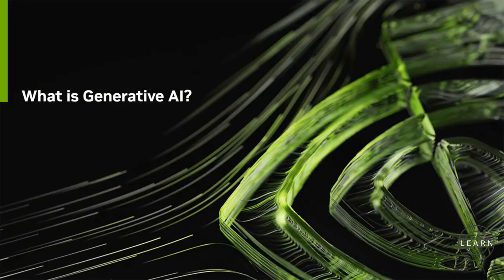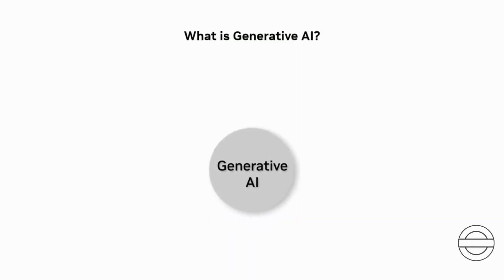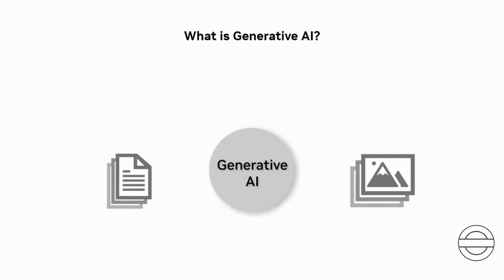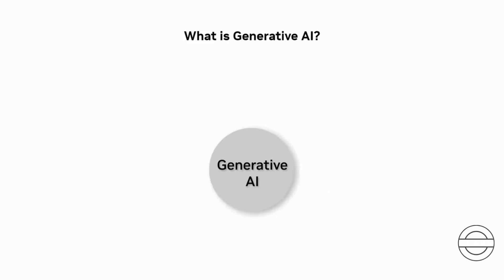In the previous unit, we learned about the AI process that allows us to reach Generative AI, but let's get a better understanding of exactly what it is. Generative AI refers to a subset of artificial intelligence that focuses on creating data or content, such as images, text, and multimedia, based on patterns and examples from a given dataset. What sets Generative AI apart is its versatility, enabling it to perform a wide array of tasks beyond text- and chat-based applications.